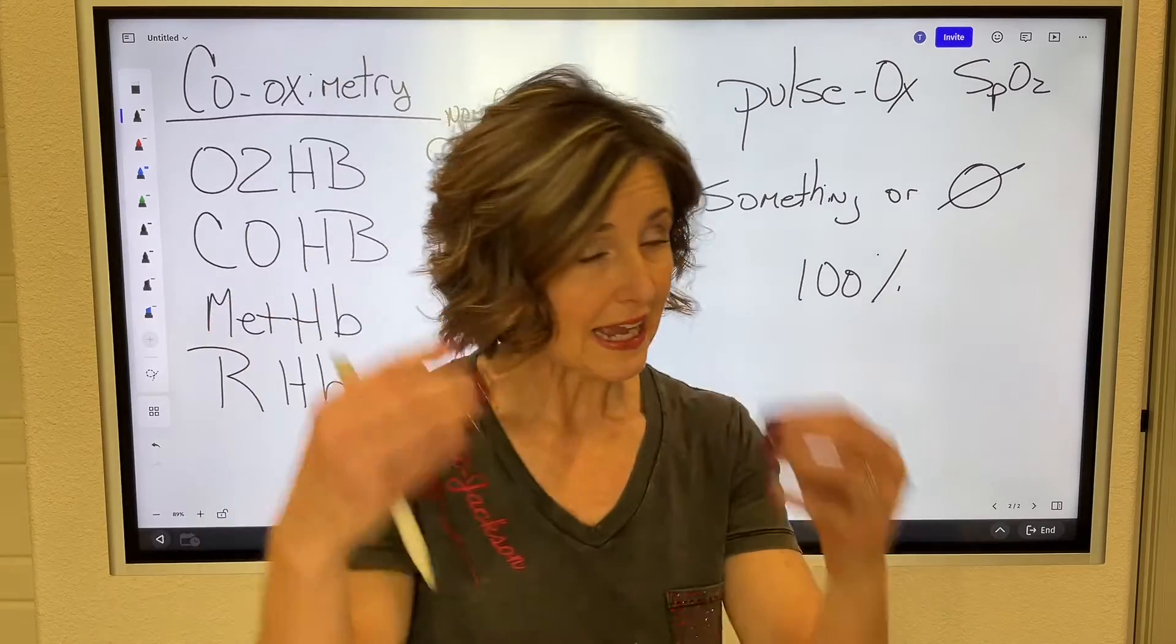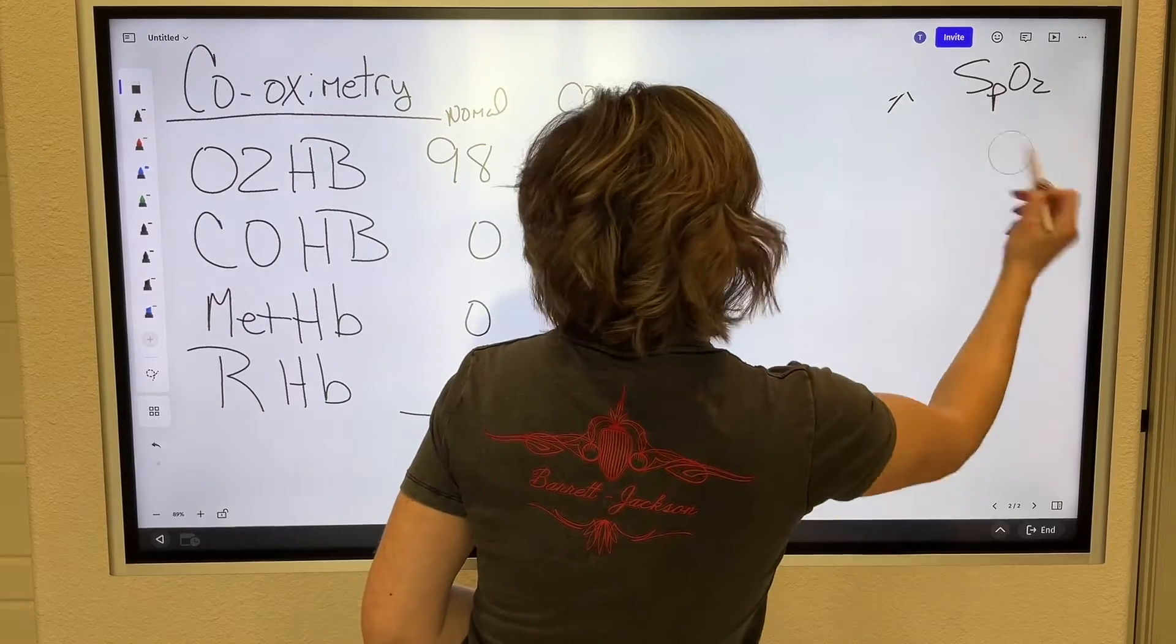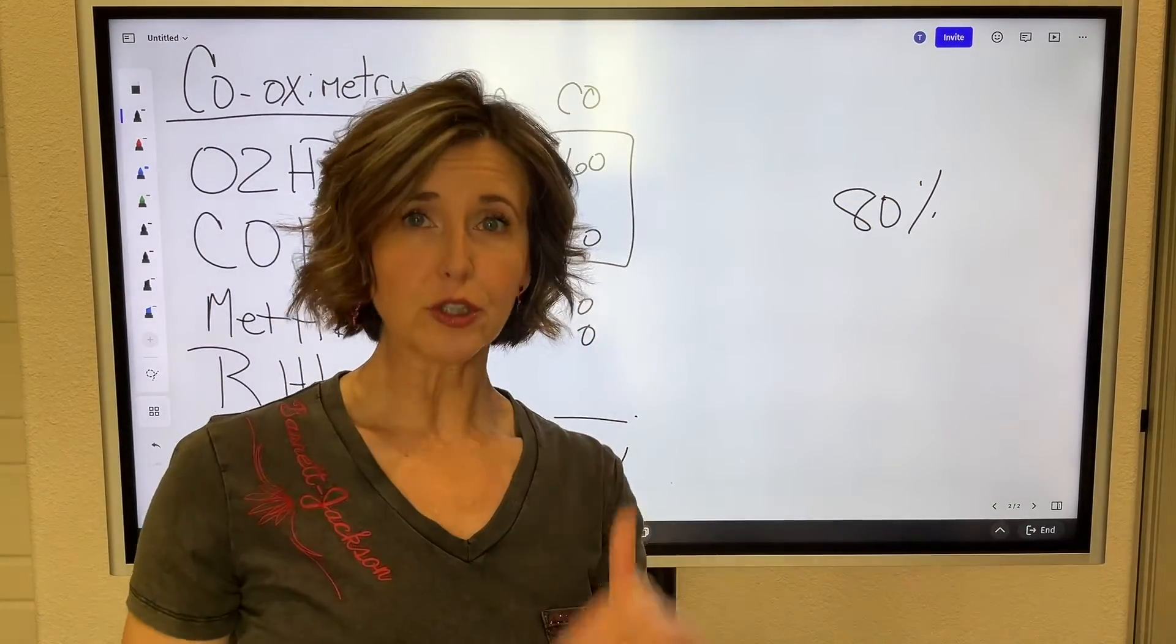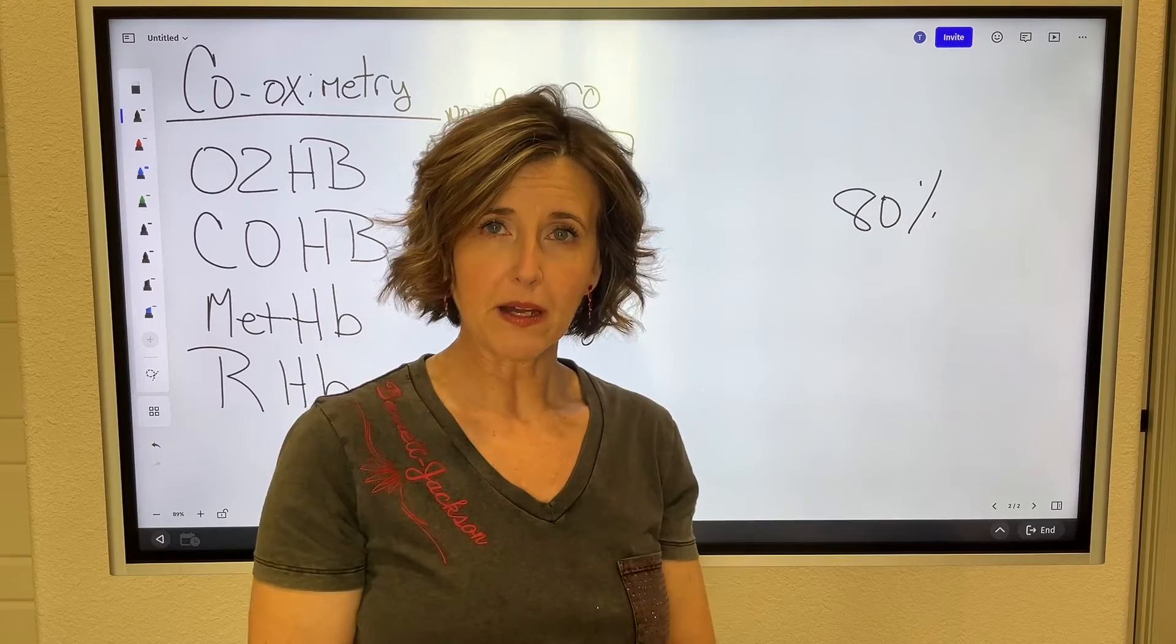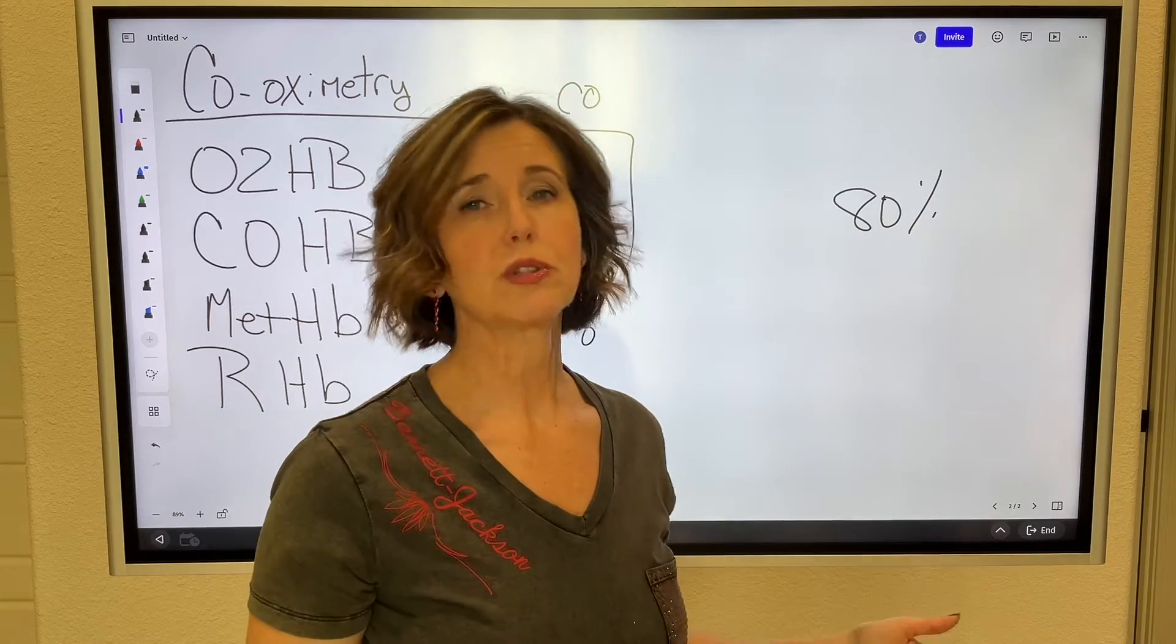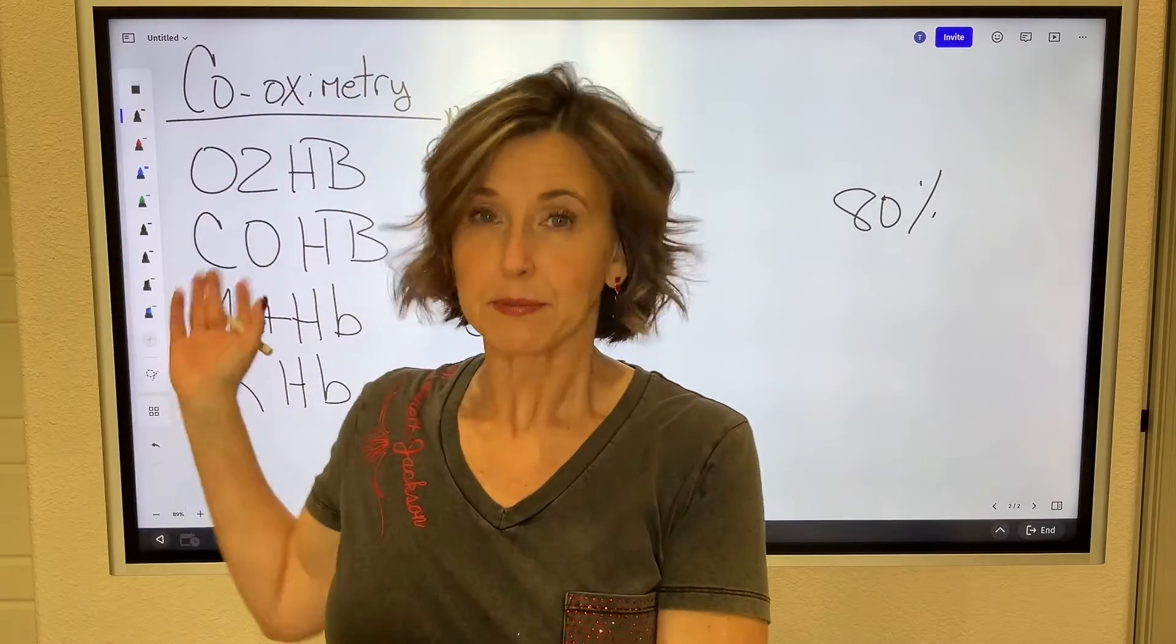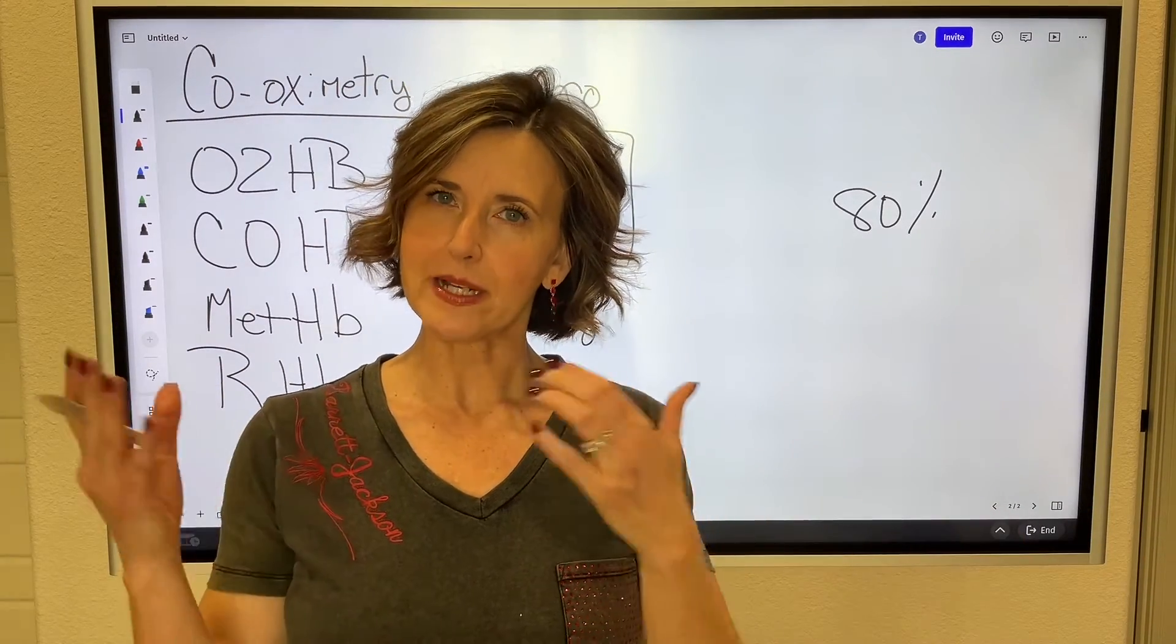So when you put a pulse ox on somebody, you need to be very aware of what's going on with that patient. If they are in a situation that they may have higher levels of carbon monoxide or higher levels of methemoglobin, you need to know that pulse ox is not going to read true. Now, in the absence of carbon monoxide poisoning or exposure to something that creates methemoglobin, if your pulse ox reads 80% and you have a good, strong reading, you make the assumption that 80% of what's bound to that hemoglobin is oxygen. 20% is reduced hemoglobin. So that's what that number's meaning. Co-oximetry, much more accurate. Actually, absolutely accurate.